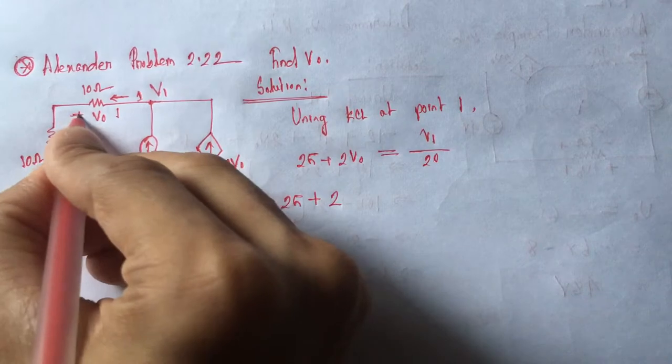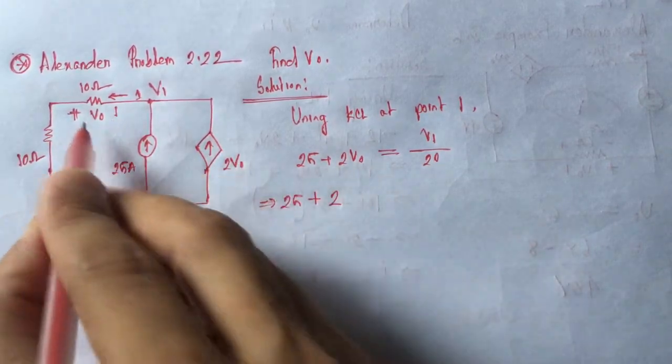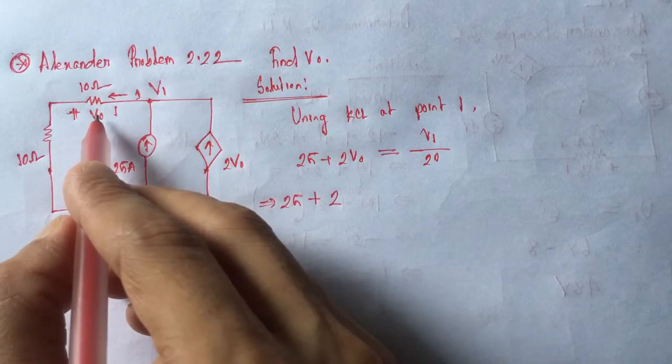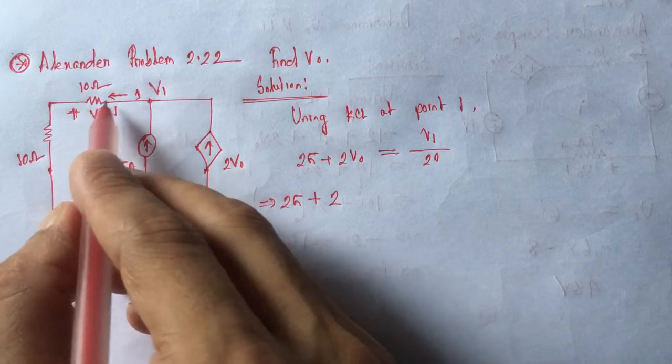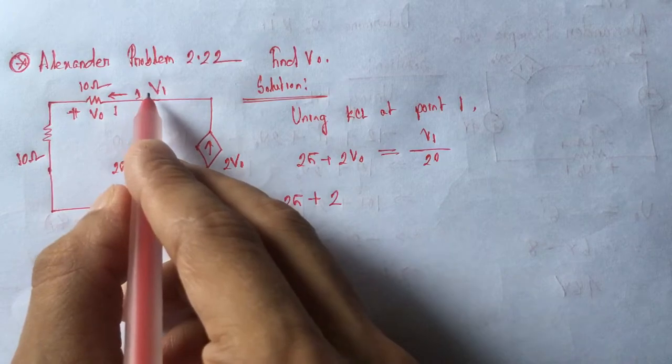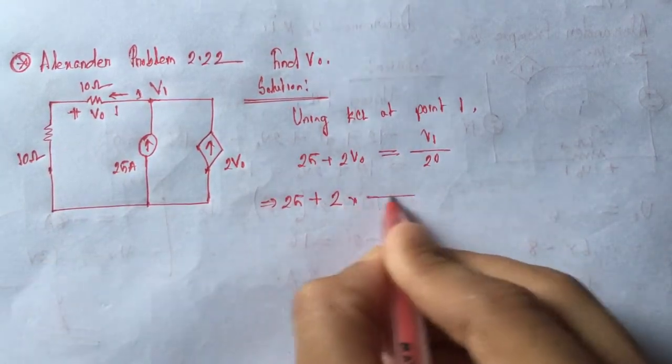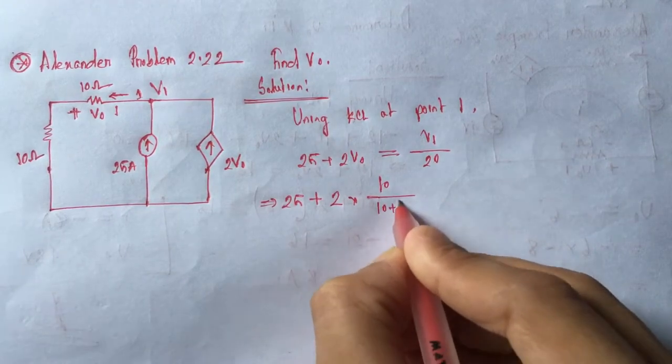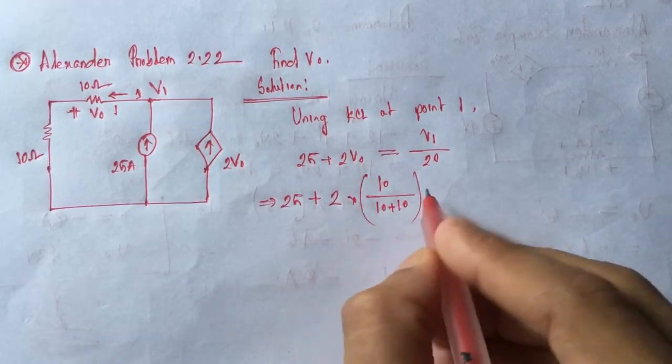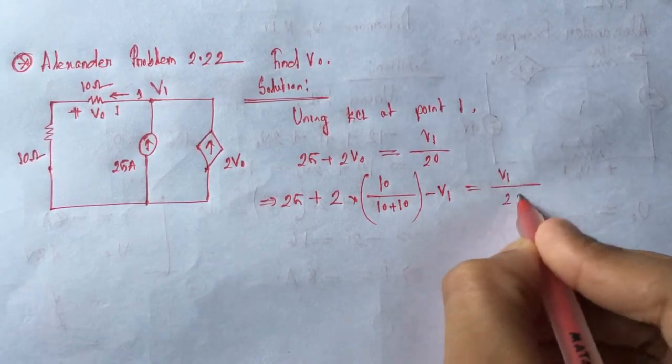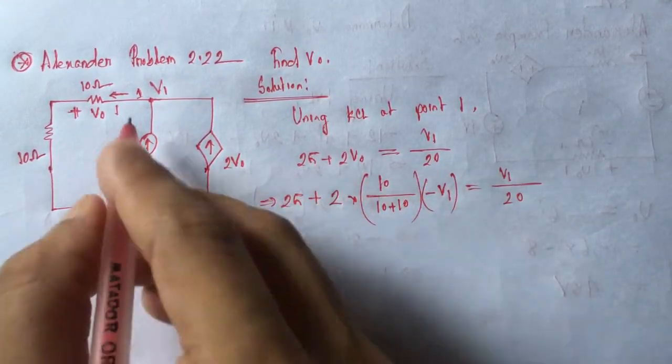V0 is the voltage across the 10 ohm resistance. Now we will find V0 using the voltage divider rule. Here the total voltage is V1, so by using voltage divider rule, V0 equals 10 by (10 plus 10) into minus V1. The voltage is minus V1 because the polarity of V0 is opposite to the polarity of V1.